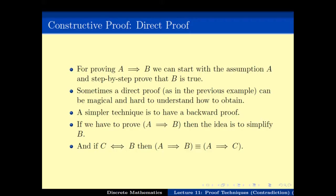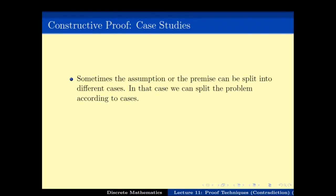There was another kind of constructive proof called the case study. Here we split the assumptions into parts: if A is written as C or D, then A implies B is the same as proving C implies B and D implies B. The main trick is to split A into cases such that C implies B and D implies B are easier to prove.